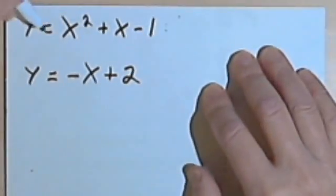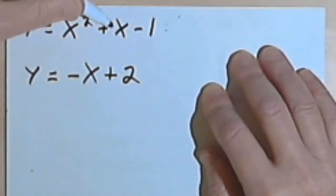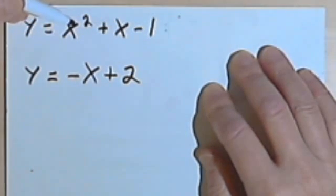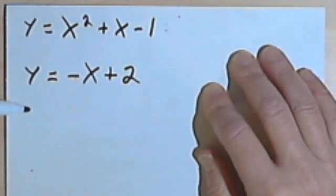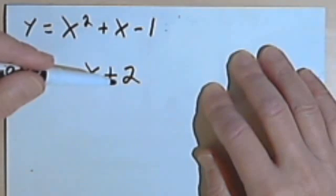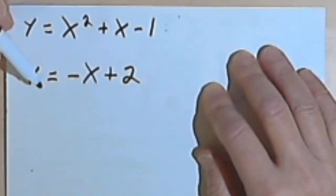Here I've got two equations. The first one is y equals x squared plus x minus 1. Now as soon as you see that x squared you know you've got a quadratic equation, which is nonlinear, it's not a straight line. My second equation is linear, it's y equals negative x plus 2. And let's say I've got to solve this algebraically.